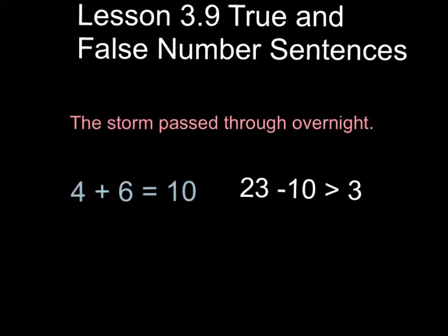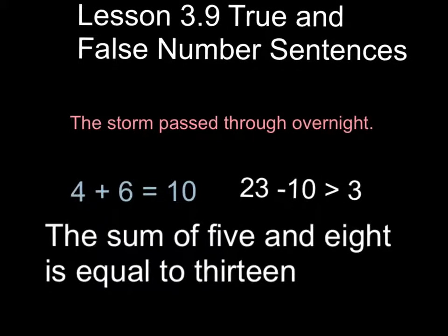One that might not look so familiar is if we write it out like the following. The sum of 5 and 8 is equal to 13. That's another way to write it. I could write it in numerals as well.